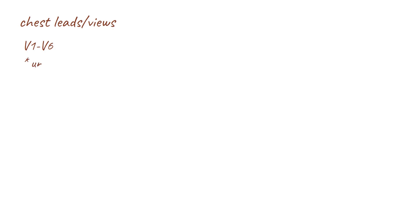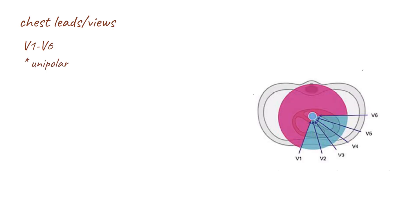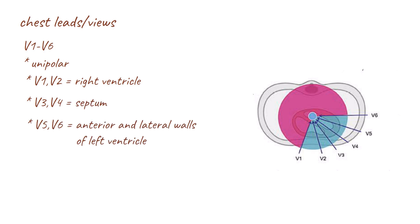There are 6 chest lead views: V1, V2, V3, V4, V5 and V6. These are unipolar leads as they only have one associated electrode. The positive pole is the electrode itself and the negative pole is the center of the heart. These leads look at the heart in the horizontal plane from the front and left side. Leads V1 and V2 look at the right ventricle, leads V3 and V4 look at the center, while leads V5 and V6 look at the anterior and lateral walls of the left ventricle.